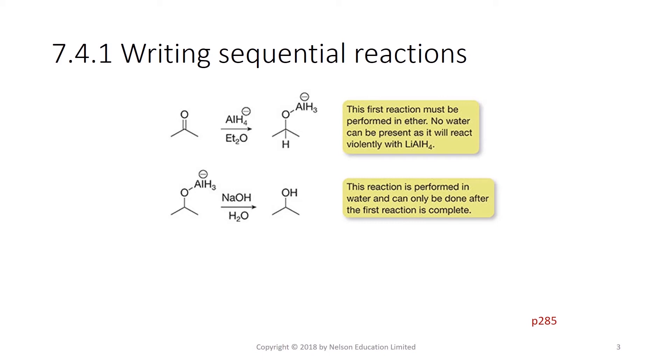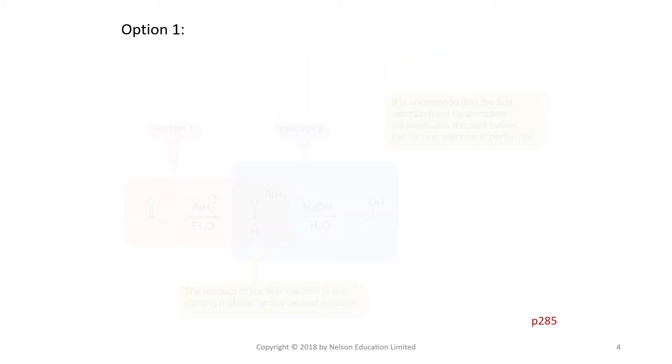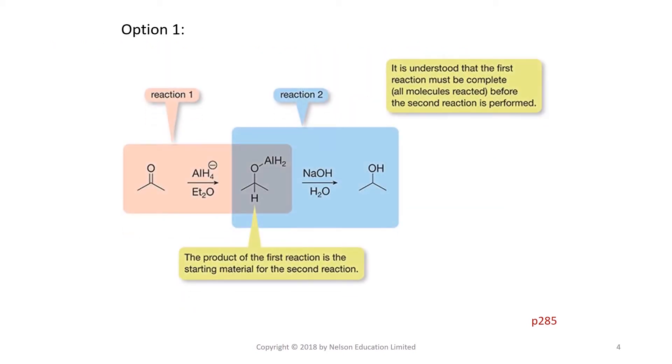These two reactions can be written as a more compact sequence. The first option is where the product of the first reaction is the reactant in the second reaction.